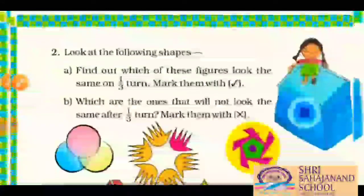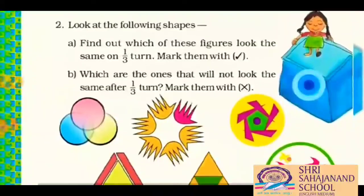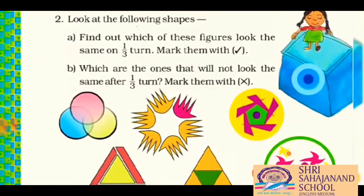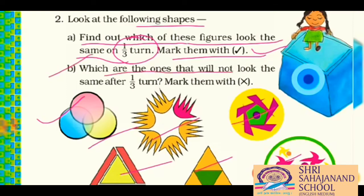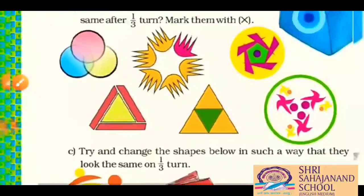Now on the next page we have the second question: look at the following shapes. Find out which of these figures look the same on one-third turn and mark them with a tick. In the second part, which ones will not look the same after one-third turn — mark them with a cross. So now let's come to the shapes.